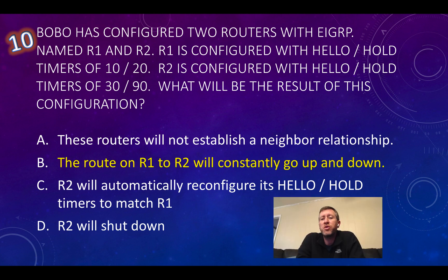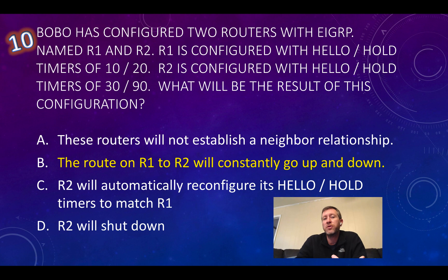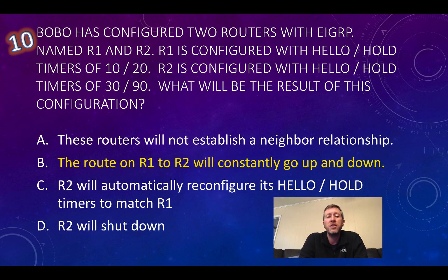Question number ten: Bobo has configured two routers with EIGRP named R1 and R2. R1 is configured with hello and hold timers of 10 and 20, and R2 is configured with hello and hold timers of 30 and 90. What will be the result? With OSPF, hello and dead timers have to match, but EIGRP works a little differently — it uses hello and hold timers. When a router receives a hello packet, it's okay that the other router doesn't have matching timer configurations.